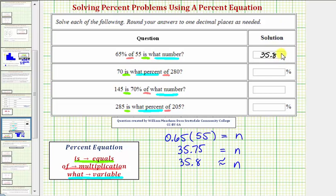Let's see if this makes sense. 65% of 55 is approximately 35.8. This does seem reasonable because 65% of 55 would obviously be less than 55, but more than half of 55, which 35.8 is.